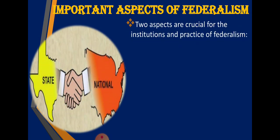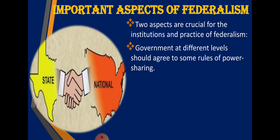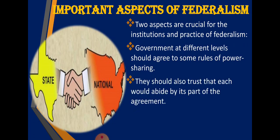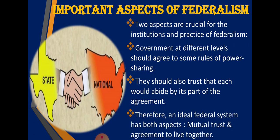Two aspects are crucial for the institution and practice of federalism. First, governments at different levels should agree to some rules of power sharing - they must accept that certain powers are separated and must not interfere in each other's domain. Second, the central government must trust the state government and the state government must trust the central government that they will follow the agreement of power sharing in real terms. Therefore an ideal federal system has both aspects: mutual trust and agreement to live together.